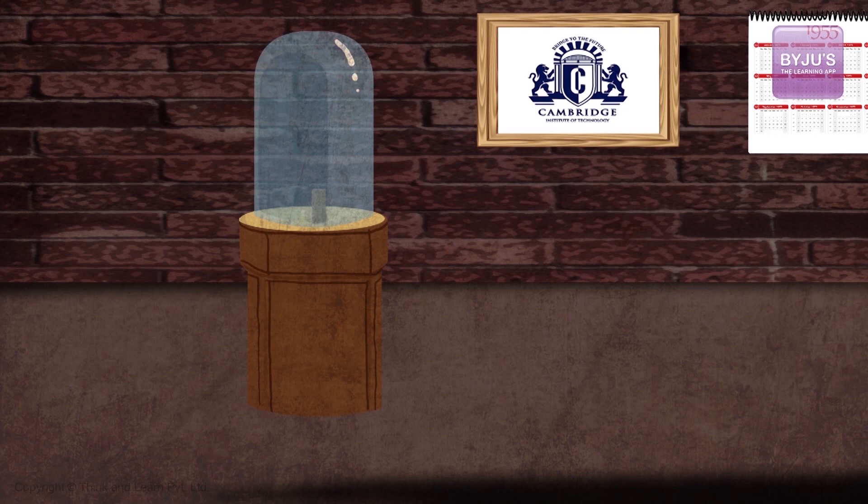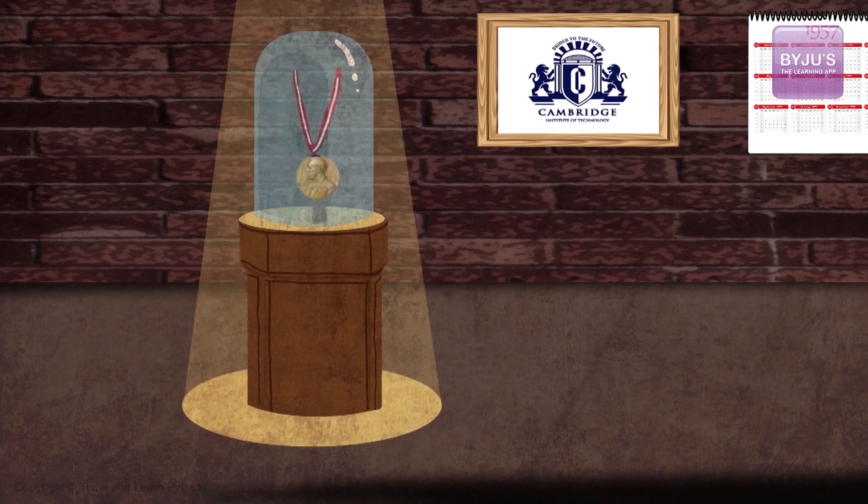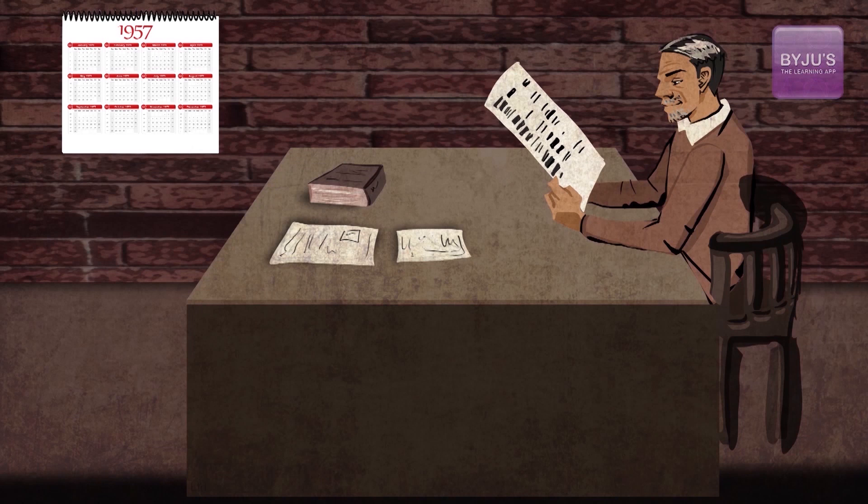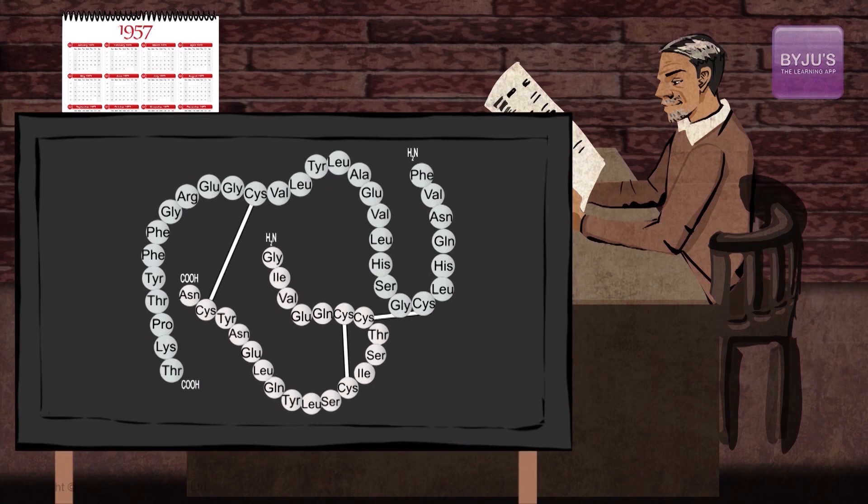He was awarded the Nobel Prize in 1957, only three years after decoding the sequences of all 51 amino acids in the two insulin chains.